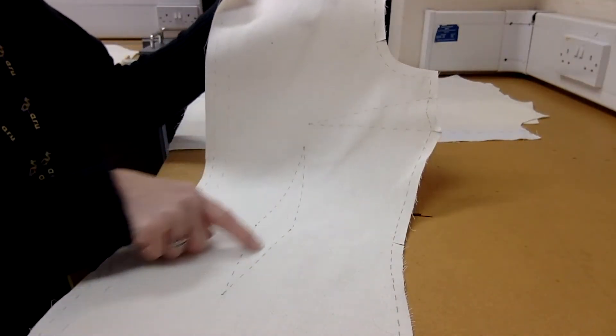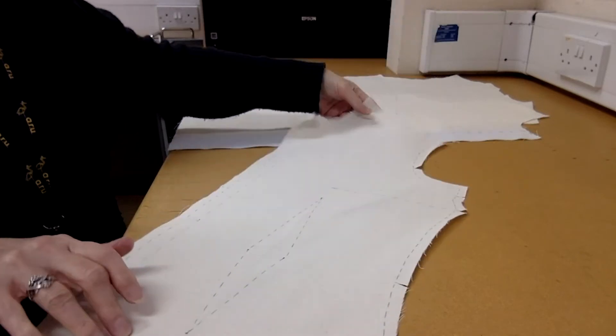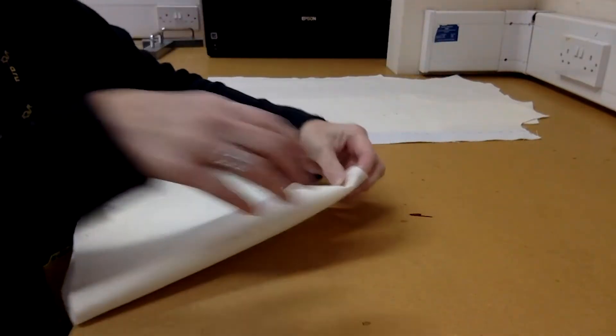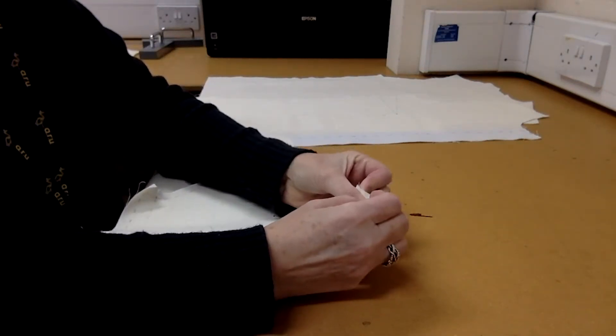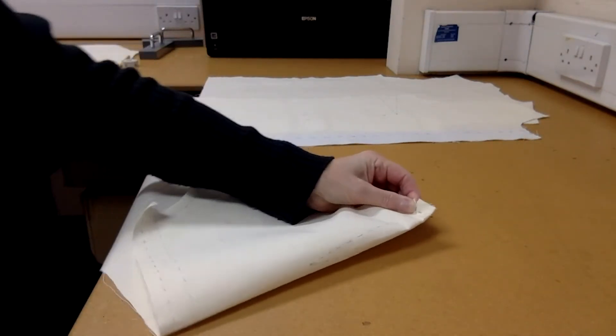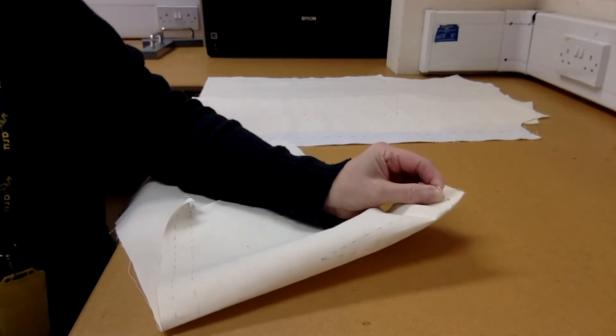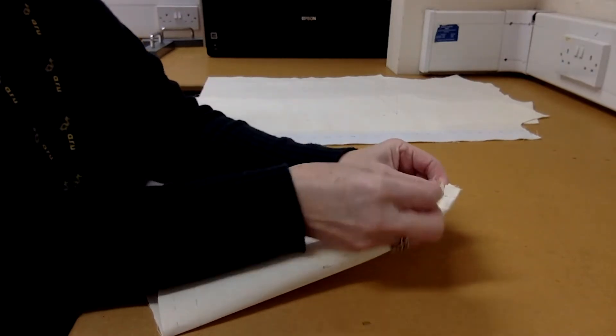So that's the bust line and the waist one. First of all, I'm going to do the bust one and I'm going to make sure that I line up my two notches there. I'm just going to put a pin in just so I know those two are lining up.